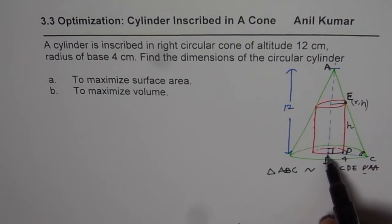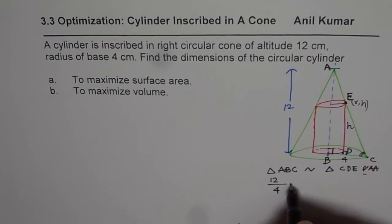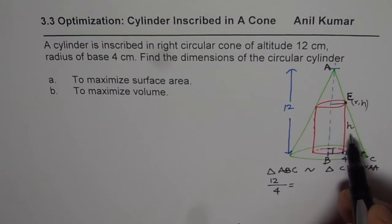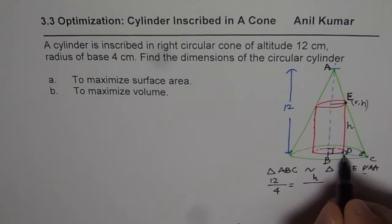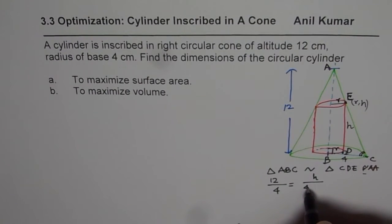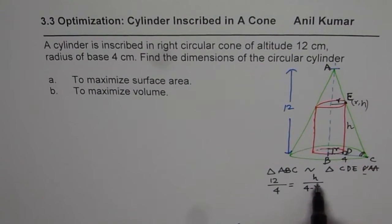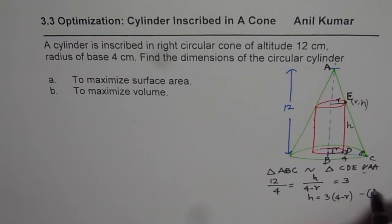Now when these triangles are similar, in that case, ratio of sides will be constant. So ratio of sides will be A, B, big triangle. A, B is 12 divided by B, C which is 4 for us, should be equal to E, D which is H over D, C. Now D, C is 4 minus R, since this is R for us. So 4 minus R. So that gives you a relation between H and R. So this is 12 divided by 4 is 3. So H is equals to 3 times 4 minus R.